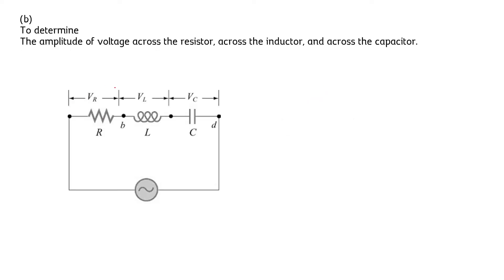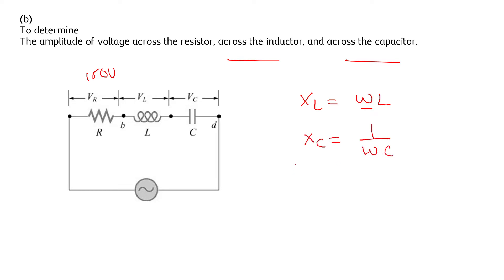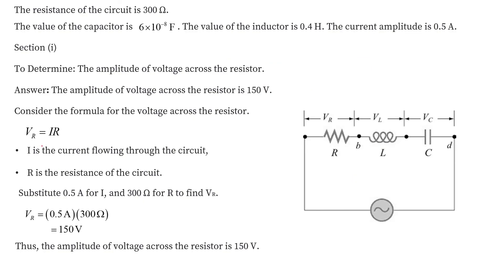So the voltage across the resistor is 150 V. Now we need to calculate the voltage across the inductor and across the capacitor. To do this, we first need to find the inductive reactance XL = ω·L and the capacitive reactance XC = 1/(ω·C). Since the source is at resonance, ω = √(1/LC).